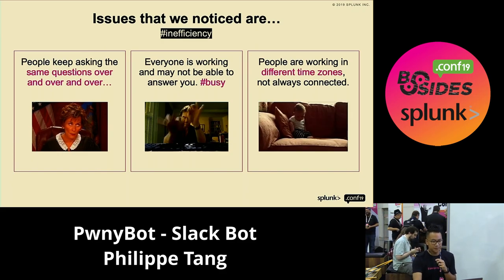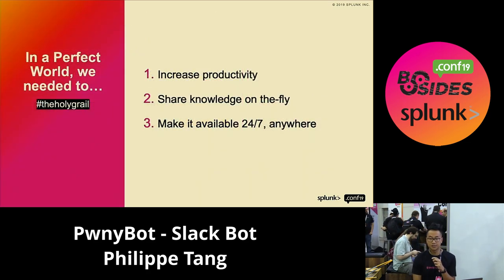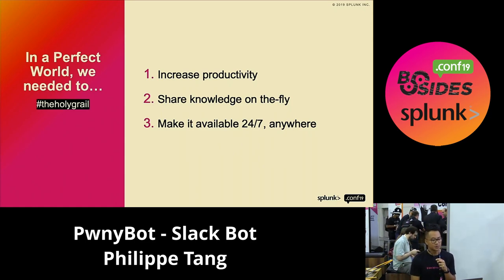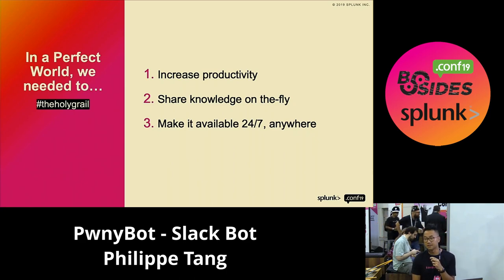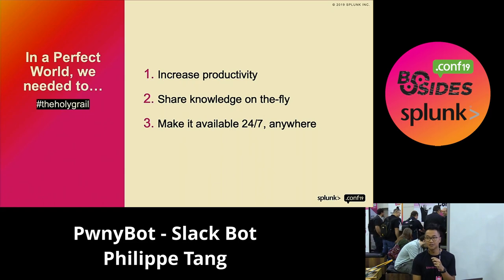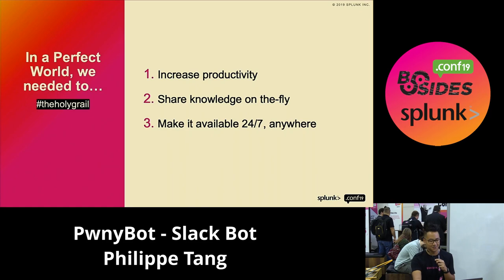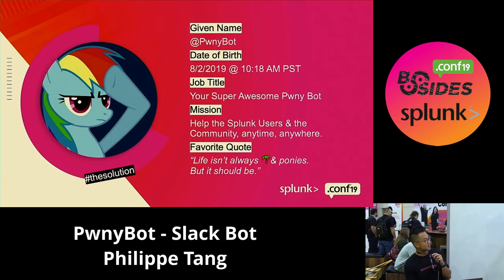In a perfect world, what was needed was to increase productivity — how do you scale yourself to be more available? The second goal was how to share knowledge on the fly. While everything is available online through docs and answers, Slack is more human and personalized. The third goal was making support available 24/7, without relying on Red Bulls or poking someone. The solution from hack week was a Slack bot called PonyBot.